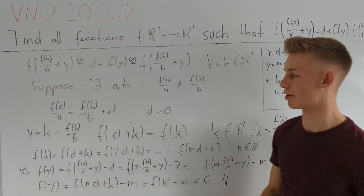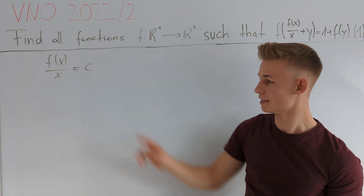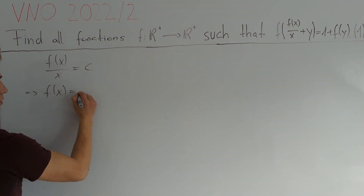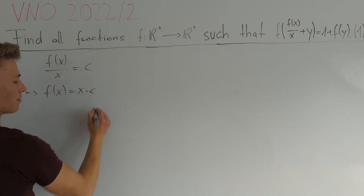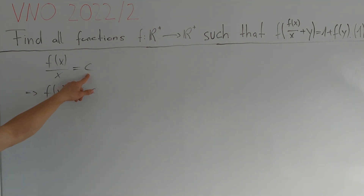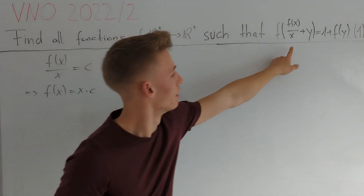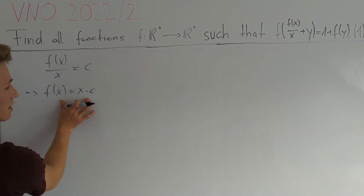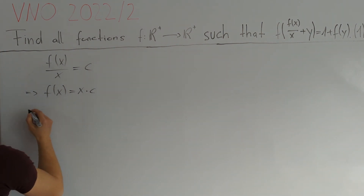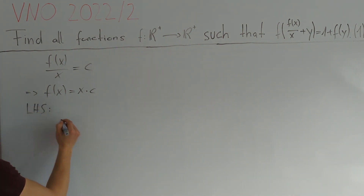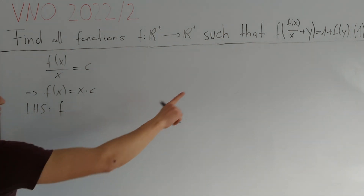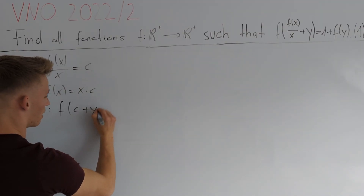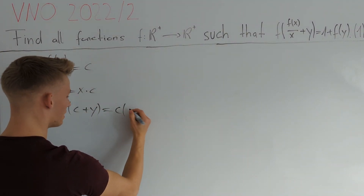With this we can finish the problem. From f(x)/x = c we get f(x) = cx. Now we want to find which values of c are valid so that equation 1 is satisfied. We plug f(x) = cx into equation 1 and get that the left hand side f(f(x)/x + y) = f(c + y) = c(c + y).